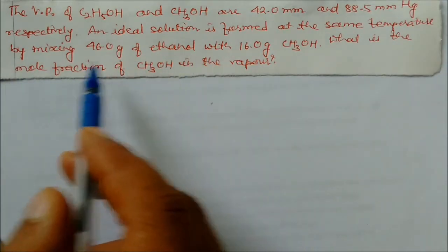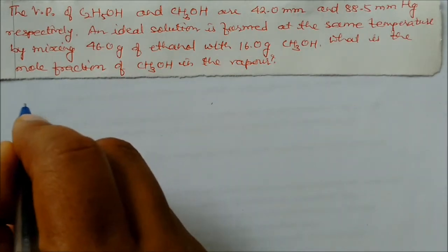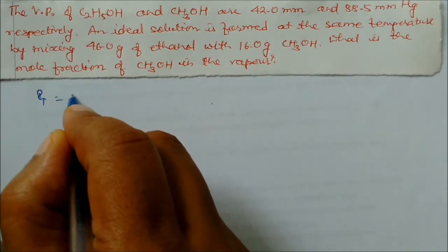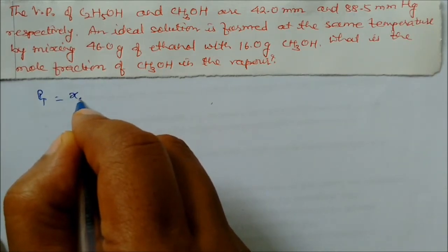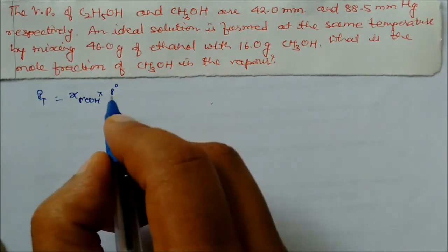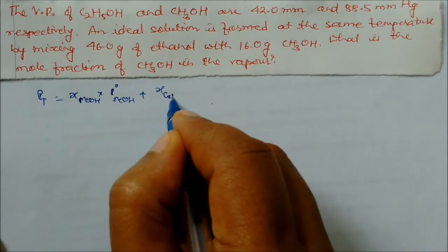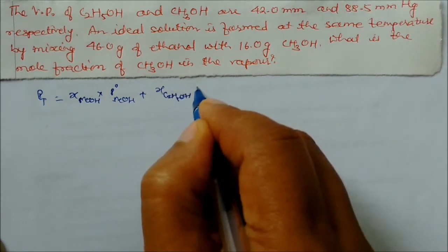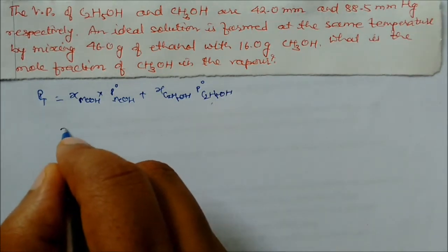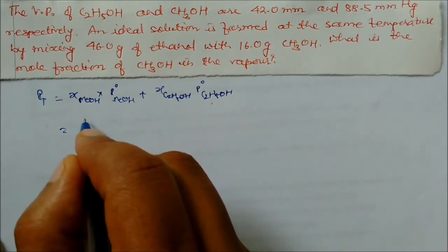We have two volatile ideal solutions, so we can directly use Raoult's Law. The total pressure equals the mole fraction of methanol multiplied by the vapor pressure of pure methanol, plus the mole fraction of ethanol multiplied by its vapor pressure. This gives us the partial vapor pressure.